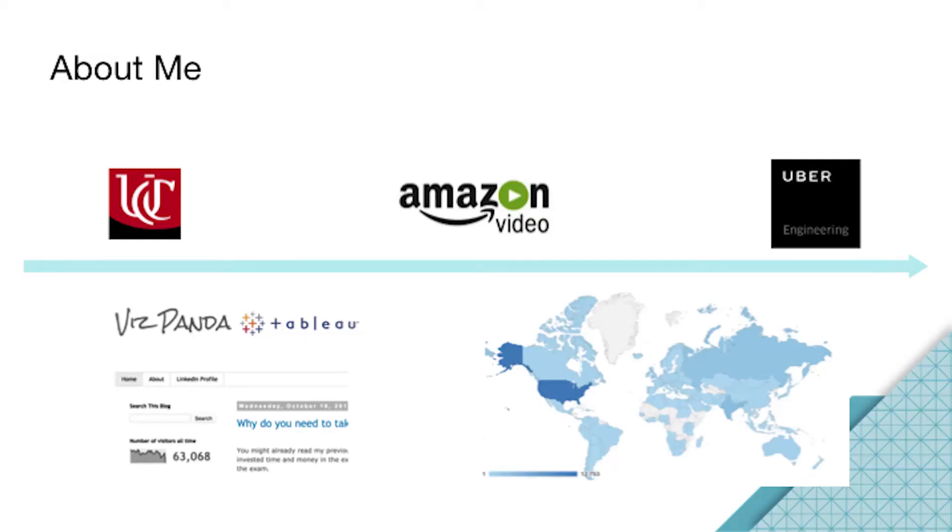About me: I graduated from Cincinnati with a bachelor's and master's degree, then right after college I joined Amazon Video as a BI engineer in Seattle. I've been at Uber for one year now as a data scientist at the experimentation platform. Outside of work, I'm very interested in data visualization and maintain a blog of two years. On the right side is a map of the audience I reached in the past two years, so if you're interested in Tableau and data visualization check it out.